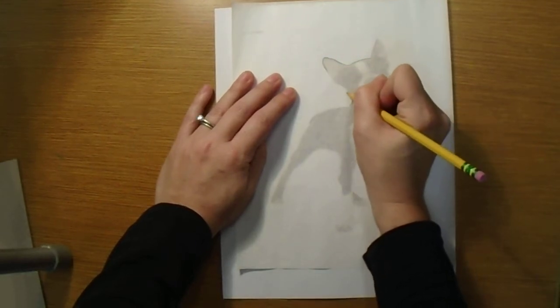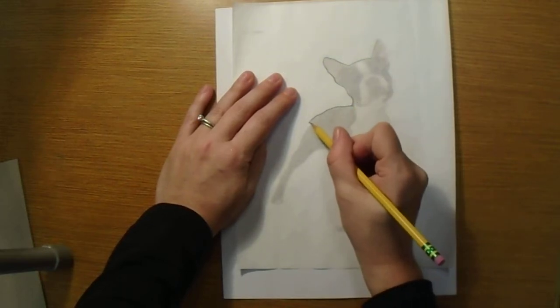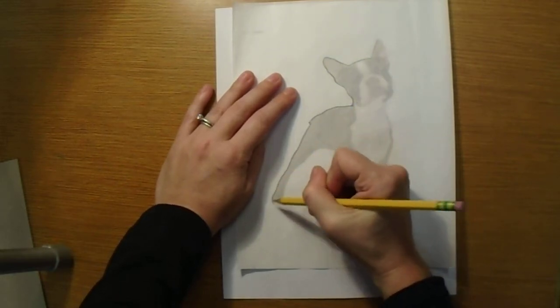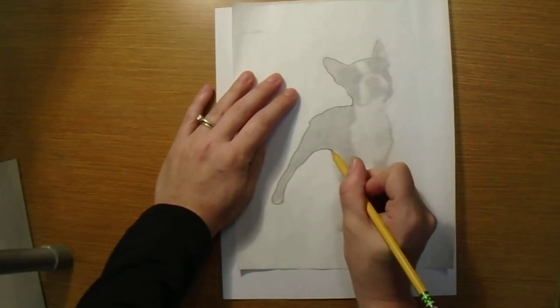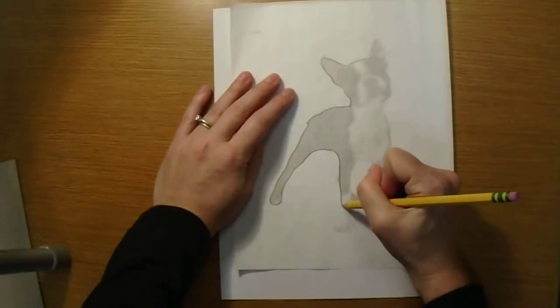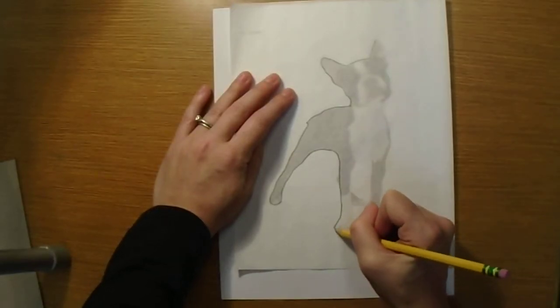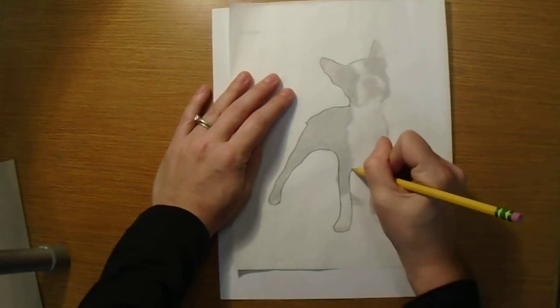You're going to press pretty hard when you trace that outside edge and you want it to be accurate because this is what you're going to be cutting out from your cardboard. So if you don't cut accurate or if you don't draw accurately, your cutout is not going to end up looking like your object.